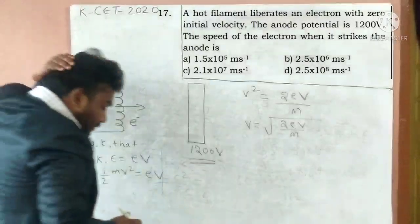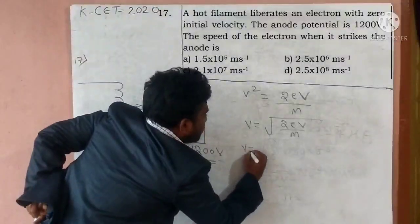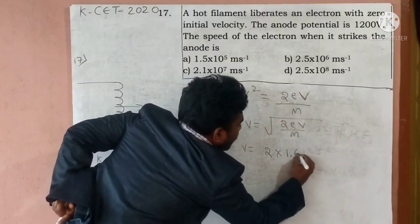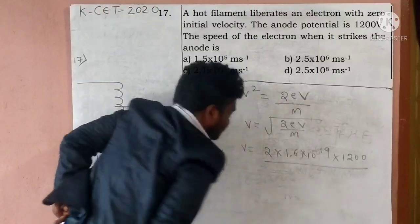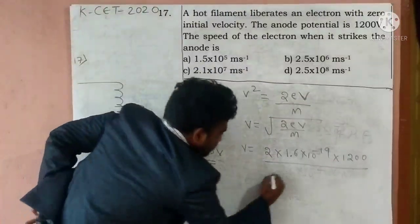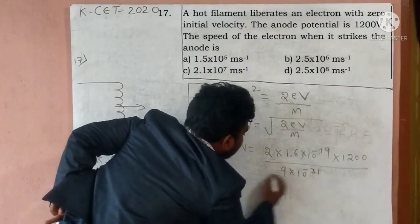Substitute the values. All the values are substituted. What do you want to do? V is equal to 1.6 into 10 to the power minus 19. Potential is 1,200. Mass. Mass of the electron. 9 into 10 to the power minus 31 kg.